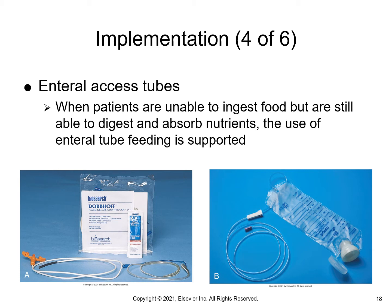Examples of enteral access tubes include: A, a small-bore enteral tube that can go through the nose or through an ET tube if someone is intubated; B, the connector where you pour in the nutrients or formula. Types of enteral access tubes include nasogastric, gastrostomy, jejunostomy, PEG tube (percutaneous endoscopic gastrostomy), or jejunostomy. These can enter the stomach or small intestines. This type of feeding is used for patients unable to ingest foods but still able to digest and absorb nutrients.